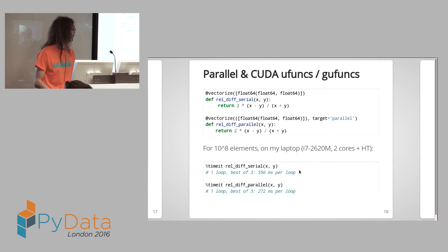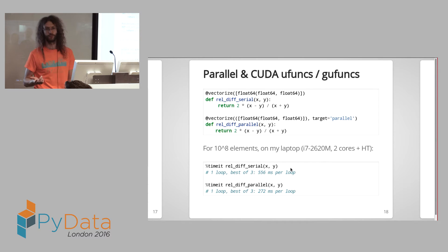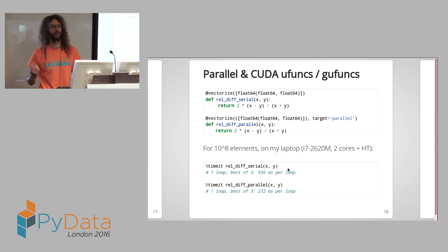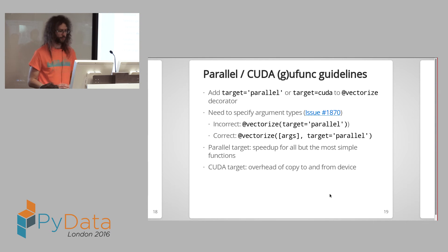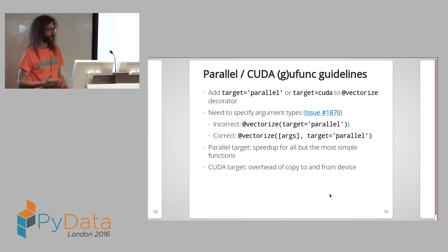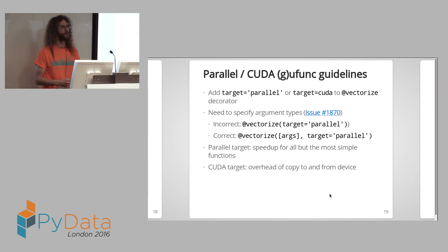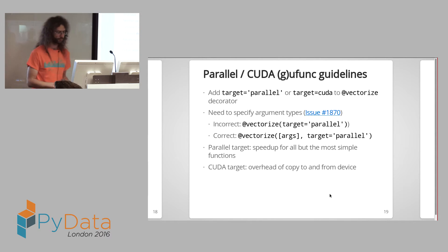I did a quick benchmark on my laptop comparing the serial and parallel versions; the parallel version was about twice as fast on my laptop which has two real cores. There is a not-yet-implemented issue: if you use the parallel target with vectorize and don't specify argument types, the ufunc won't work. You need to pass in a list of argument types. There's an issue open for that, so it should get fixed in the future.